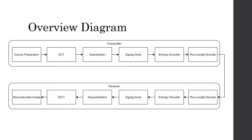This is the overview diagram of the JPEG compression algorithm. This diagram shows each process that the transmitter and receiver must perform to compress and decompress the image. In this presentation, I will go over each component of the compression algorithm.